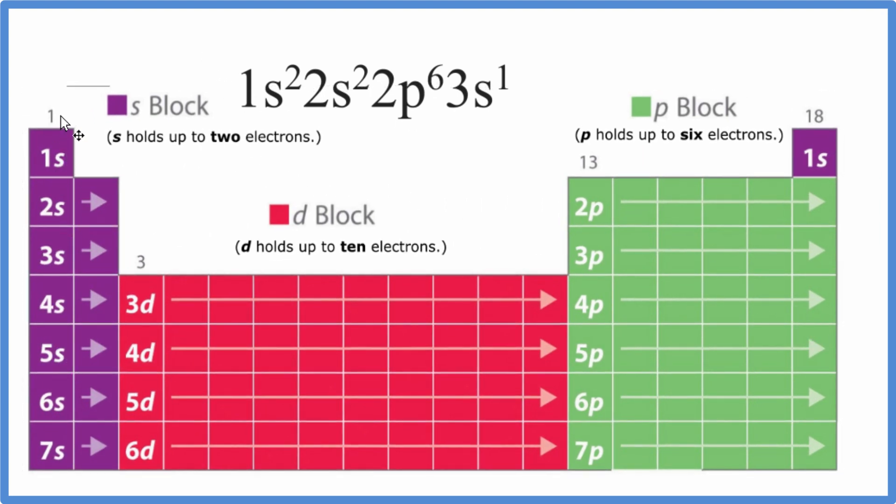All of these, this row right here, group 1 ends in S1. This row over here ends in S2. And that's because S holds up to 2 electrons. The D block holds up to 10 electrons. So we have D1, 2, 3, 4, all the way to 10. Then for P, which can hold up to 6, 1, 2, 3, 4, 5, 6.